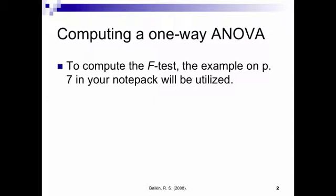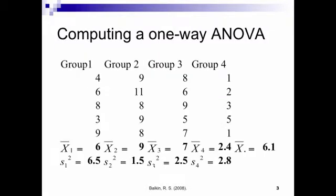If you turn to page seven, you'll see this exact example written out. In this example, we have four groups — we could use the example of a self-efficacy measure with four different classes — and you'll see the raw data here. At the bottom you'll see the mean of each group: X-bar one, X-bar two, X-bar three, and X-bar four. Below that you'll see the variance of each group — S-squared one, S-squared two, and so on. Remember, S-squared is the variance. Over in the corner you'll see a value called the grand mean, which we'll talk about later.